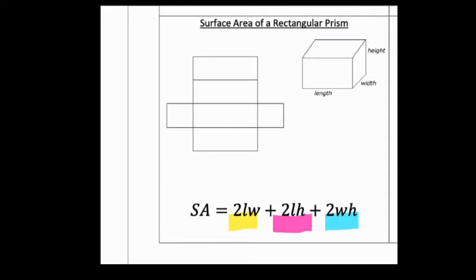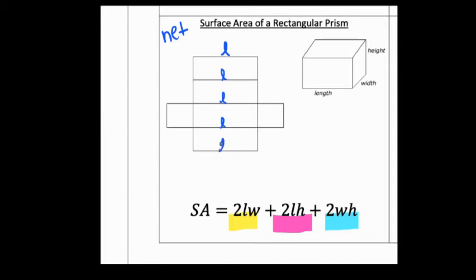What is drawn here is the net of a rectangular prism. A net is a shape unfolded so all faces are shown. If you unfolded all the sides, you would get all these different layers. This first side is your length — all of these lengths correspond to the actual length of the shape, whatever that measurement is.